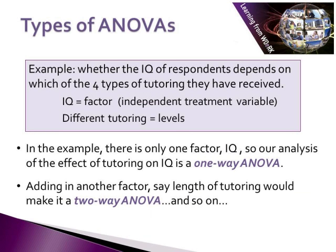Considering types of ANOVAs: if we look at whether the IQ of respondents depends on which of four types of tutoring they have received, IQ is our factor or independent treatment variable, and the different tutoring types are our levels. In this example there is only one factor, so the analysis of the effect of tutoring on IQ is what we call a one-way ANOVA. If we add in another factor, say the length of tutoring, that would make it a two-way ANOVA. The more factors you add in, the more ways you compute your ANOVA.